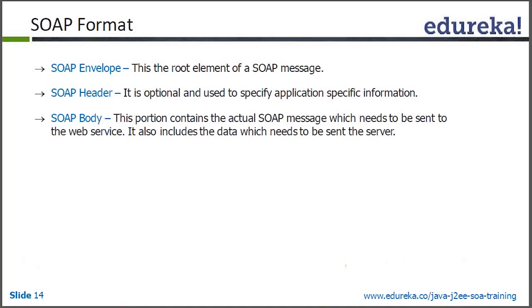For example, to get the stock information for Oracle stock, the function might be called 'get stock'. The attribute name is 'Oracle' to specify which stock you want. In the SOAP body, you specify that you're calling get stock for Oracle, and the response will return a floating-point or string value containing the stock price.